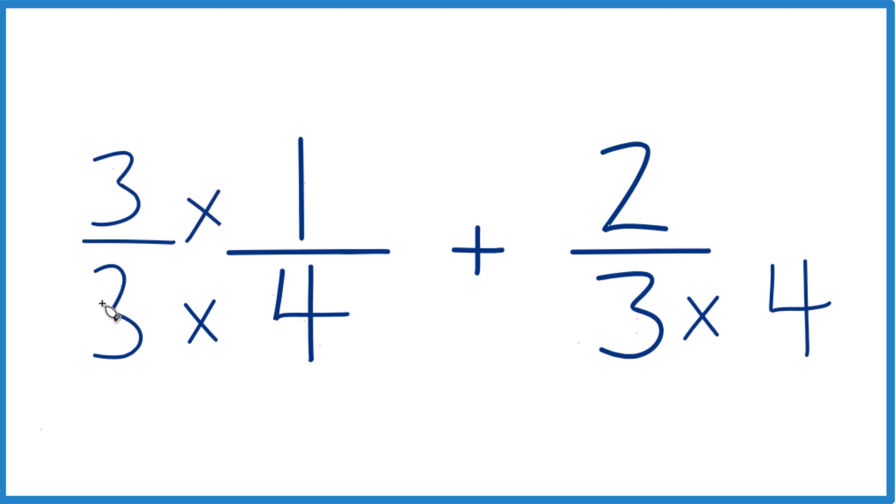And that's because 3 over 3, that'd just be 1. So we're multiplying by 1, don't change the value, just the way it's represented. Over here 2 times 4, so we have 4 over 4.